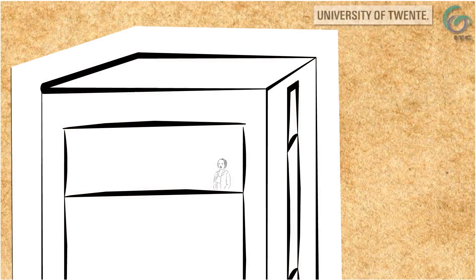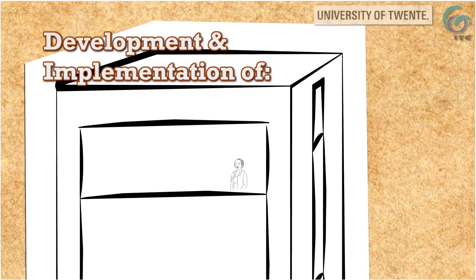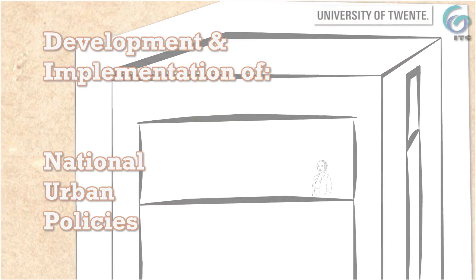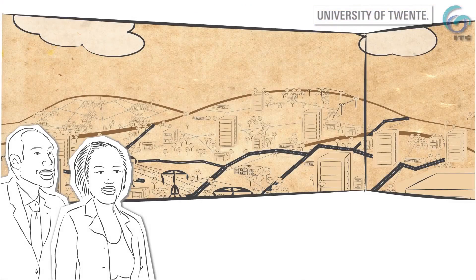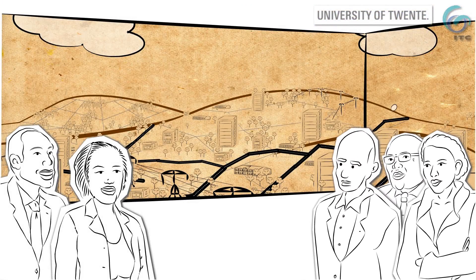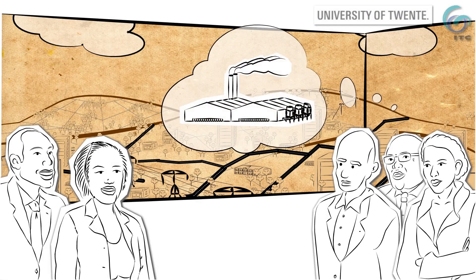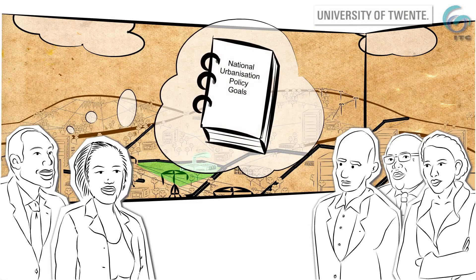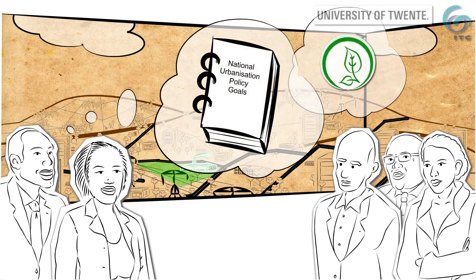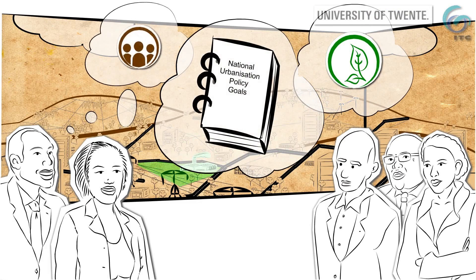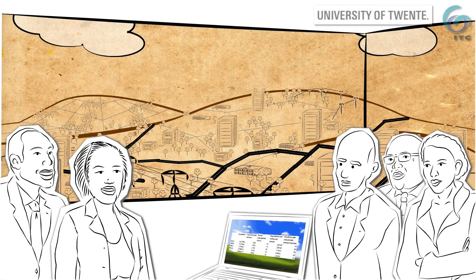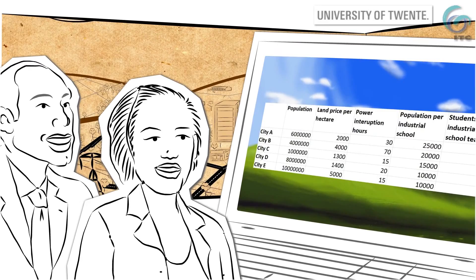You are involved in national urbanisation policy-making and implementation. Your target is to attract investors — let's say factory investors — and help them find a good location. At the same time, you have to deliver on other policy goals about the environment, society and so on. This is your work and you are good at it.